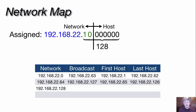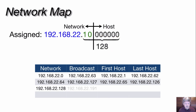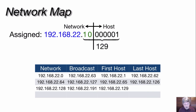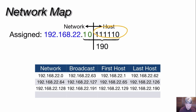For the third subnet, the subnet bits increment from 01 to 10. With all host bits zero, converting the fourth octet gives us our next subnet address of 128. Changing all host bits to ones gives us the broadcast address of 191. The first valid host is 129 — all zeros with a one in the least significant bit. Toggling to all ones with a zero in the least significant bit gives us the last valid host address of 190.